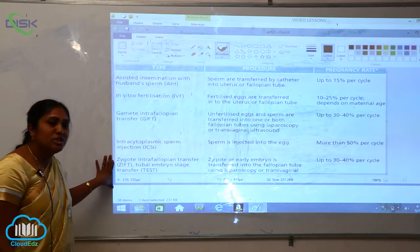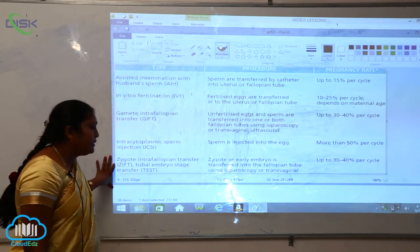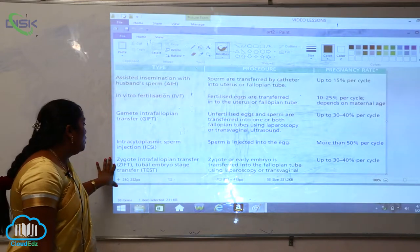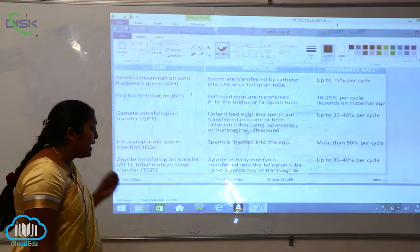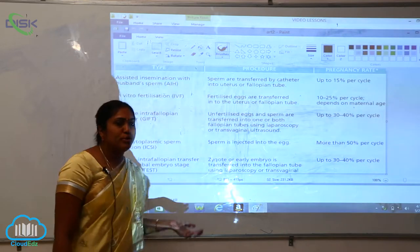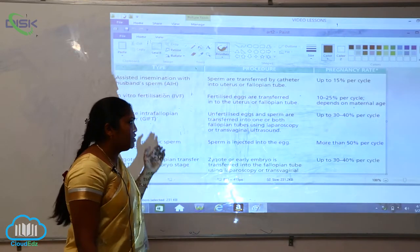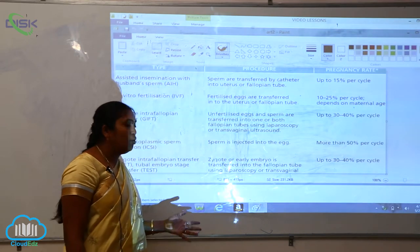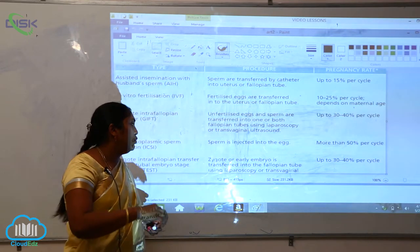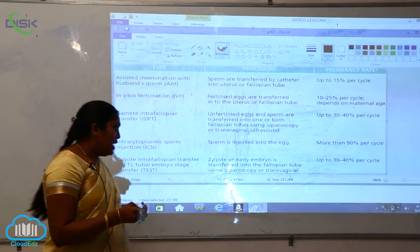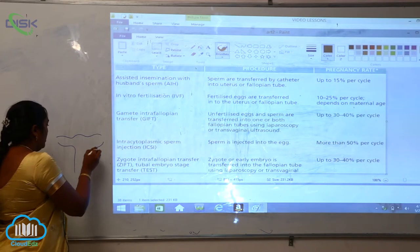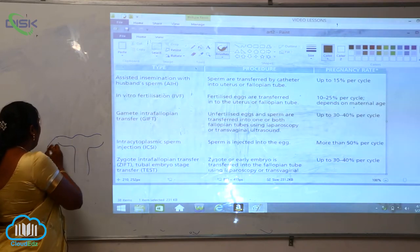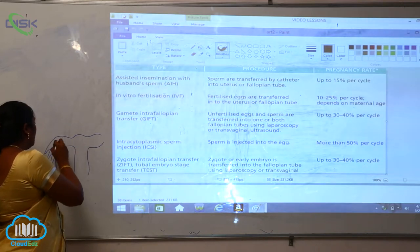The last one is ZIFT, zygote intra-fallopian transfer, or tubal embryo stage transfer, which we call TEST. What is the procedure here? The zygote or early embryo is transferred into the fallopian tube. As you know, this is the actual female reproductive system. Here will be the fallopian tube.